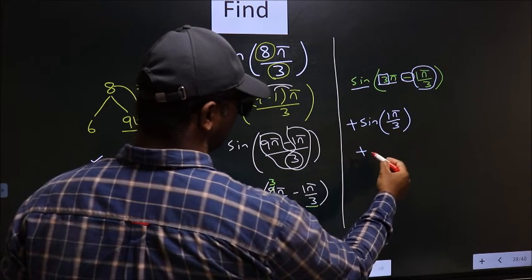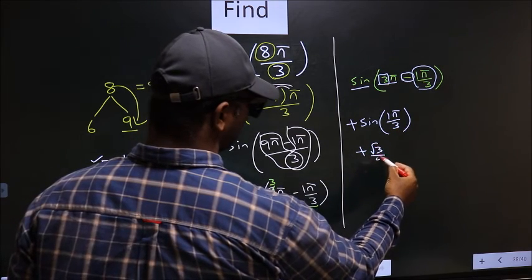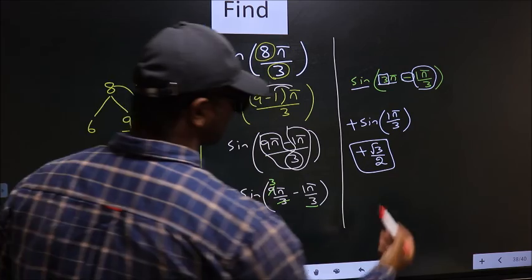So plus sin(π/3) is √3/2. So this is our answer.